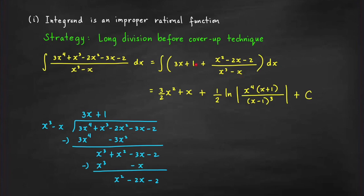We can now easily integrate this expression. The result is 3 halves x² plus x — from the polynomial part — plus the integral of the remainder fraction. We found that integral earlier, so this equals 1 half ln|x⁴(x + 1) / (x − 1)³| plus the arbitrary constant C.